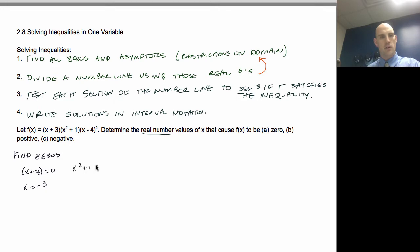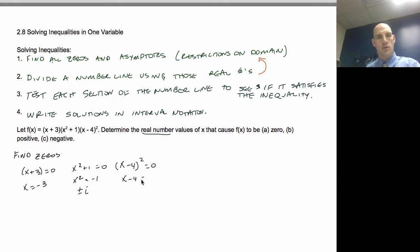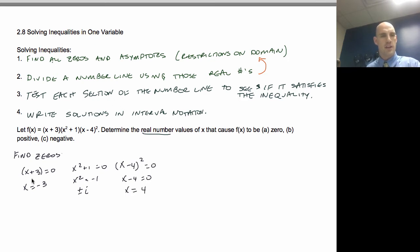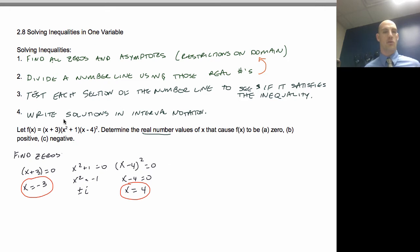x² + 1 = 0 gives x² = −1, so x = ±i — not real. And x − 4 squared = 0, so x − 4 = 0, giving x = 4. The two real zeros are x = −3 and x = 4.